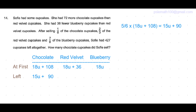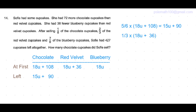Two thirds of the red velvet cakes were sold, which means one third of the red velvet cakes was left. One third of (18 units + 36) equals one third of 18 units, which is 6 units, plus one third of 36, which is 12. So 6 units plus 12 red velvet cakes are left.